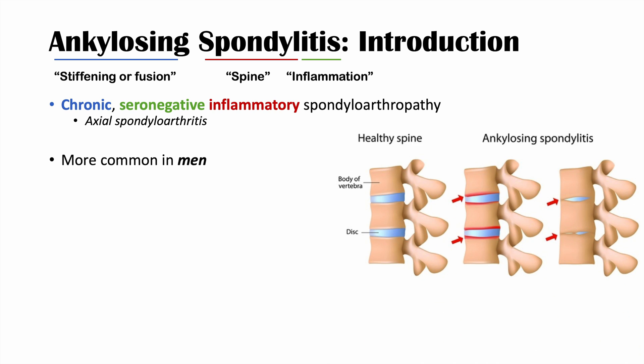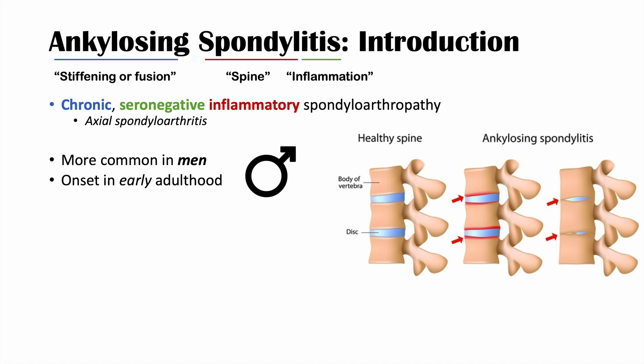Ankylosing spondylitis is more common in men compared to women. The ratio of men to women is actually three to one. So this is a more common condition in males. It has an onset in early adulthood, typically in the late teens to early twenties, and can be anywhere from 15 to 45 years of age.